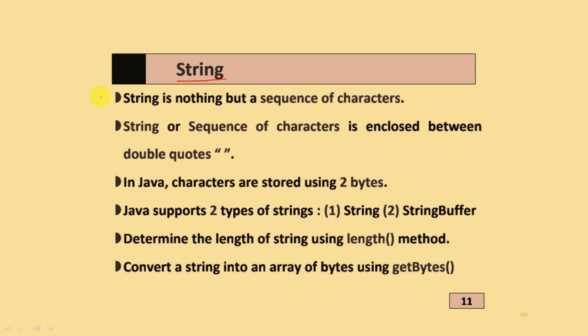String is a sequence of characters enclosed between double quotation marks. In Java, characters are stored using two bytes. Java supports two types of strings: string and string buffer. To determine the length of the string, we use length method. Converting a string into array of bytes is done by using getBytes option.